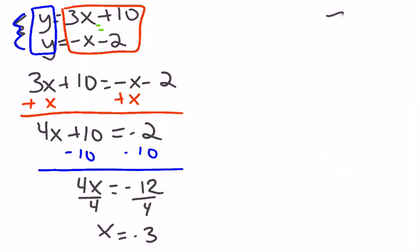But you're not done, because remember the solution to a system is a coordinate, so I need an x and a y. Now in this one, it's equally easy to plug in the x equals negative 3 into either equation, so I'm just going to go with the first one.